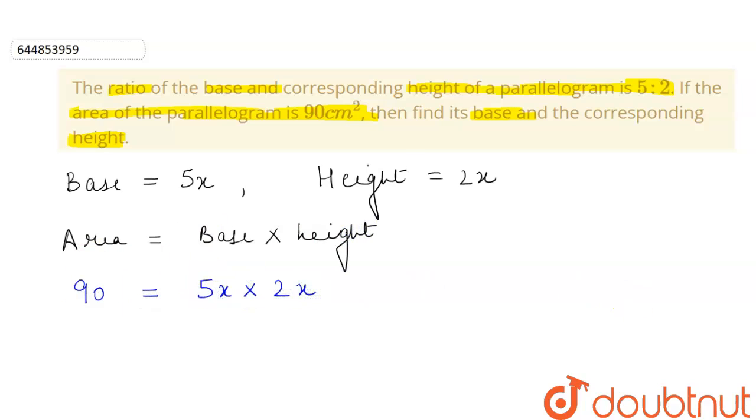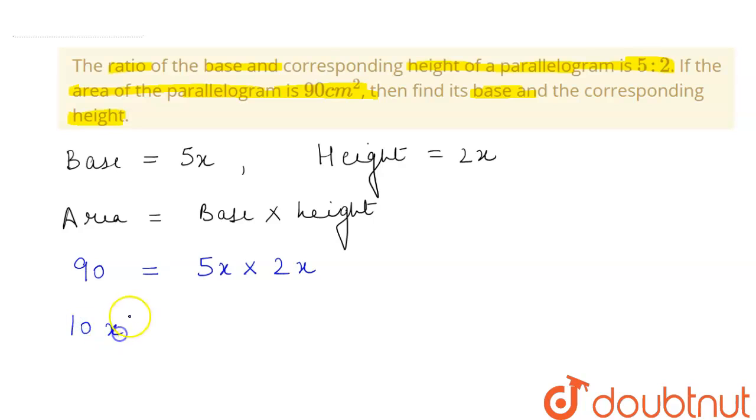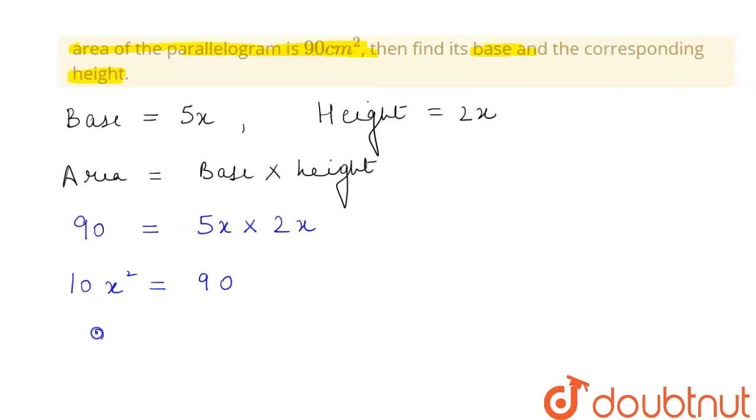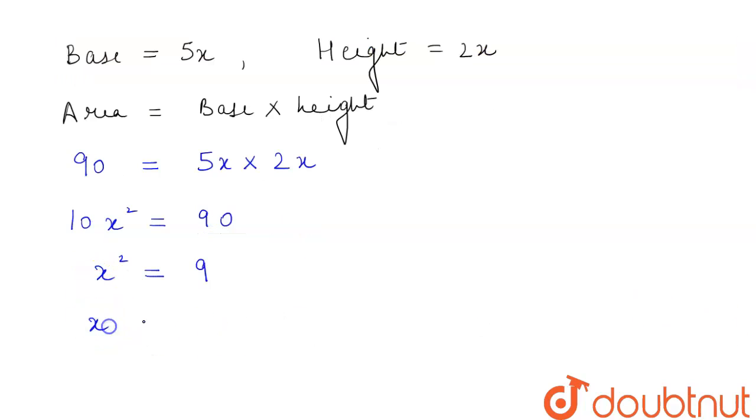So this will be equal to 10x² equals 90. From here we get the value of x² to be equal to 9. So if we take square root on both sides, this will be x equals square root of 9, so this will be equal to plus or minus 3.